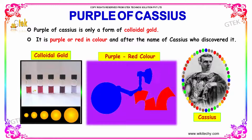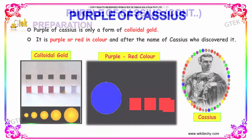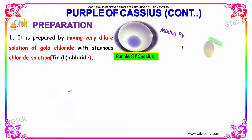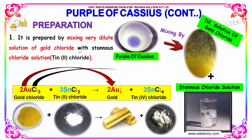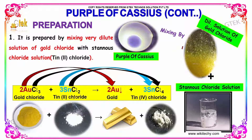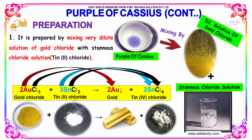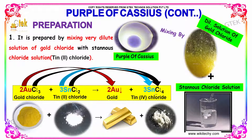You are able to see the colloidal gold here. It is prepared by mixing a very dilute solution of gold chloride with stannous chloride solution. You are able to get the gold separately and the tin chloride — the stannous chloride — separately.